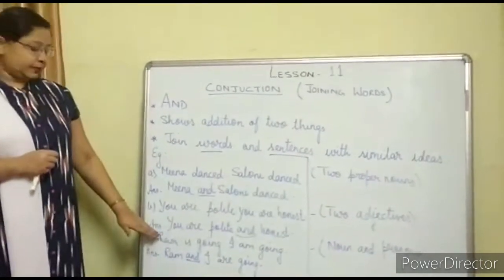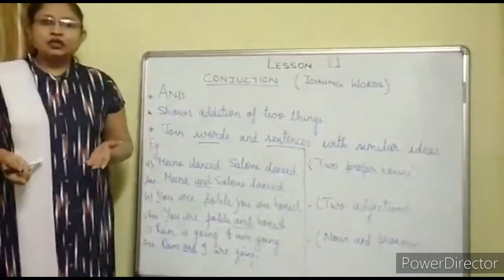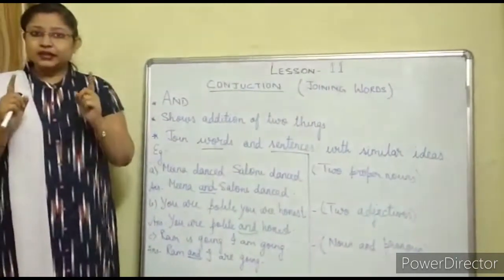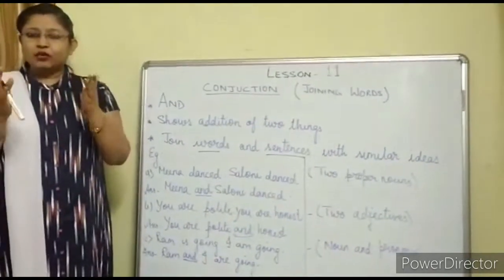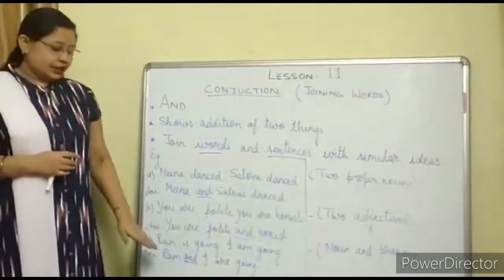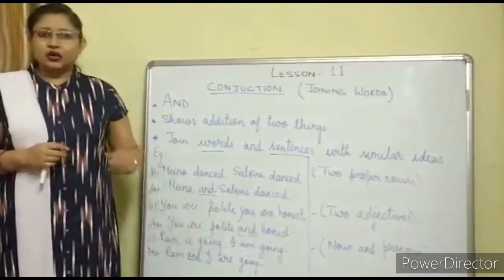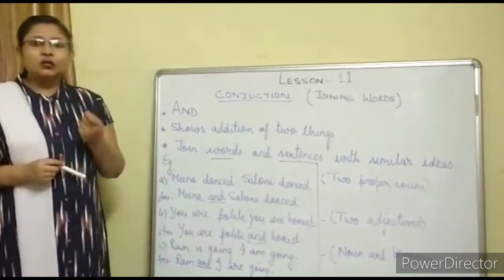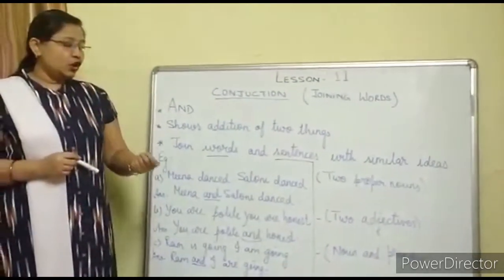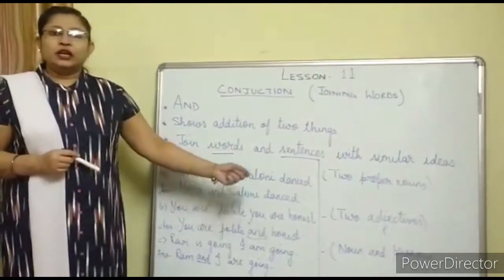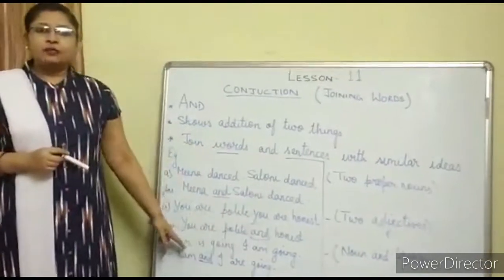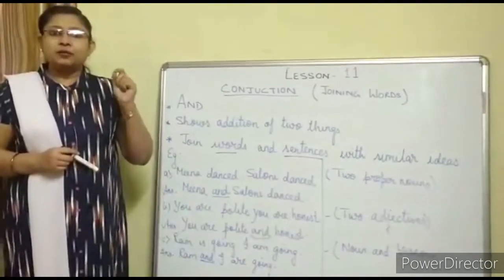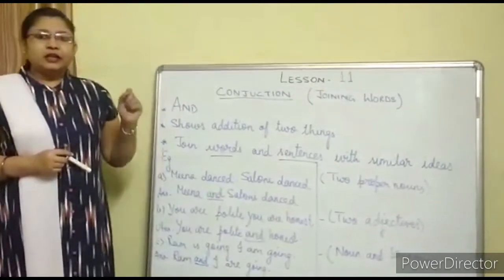Third example: 'Ram is going' and 'I am going' — again two different sentences, but the idea is the same; both of them are going. So we join them: 'Ram and I are going.' In this third example, we are joining a noun and a pronoun. Ram is a noun and 'I' is a pronoun.